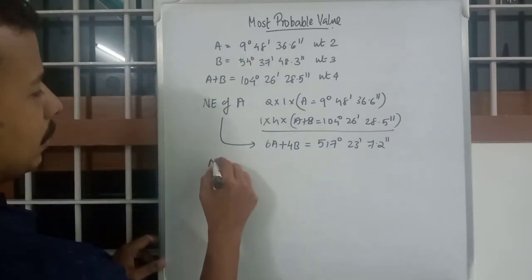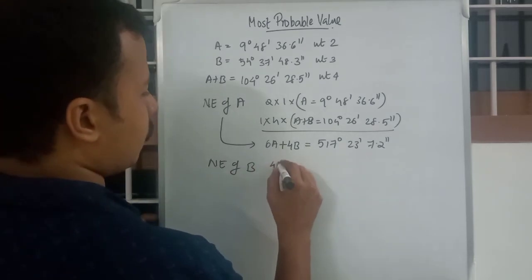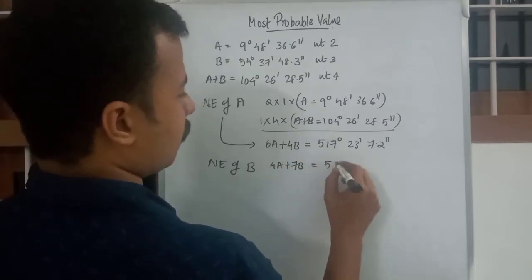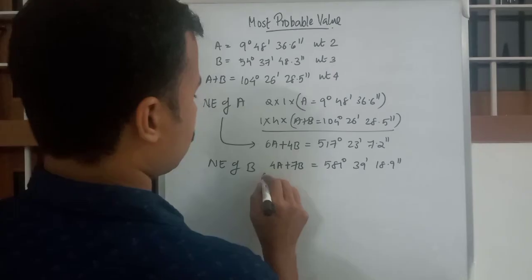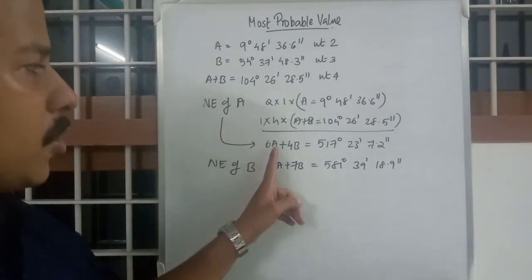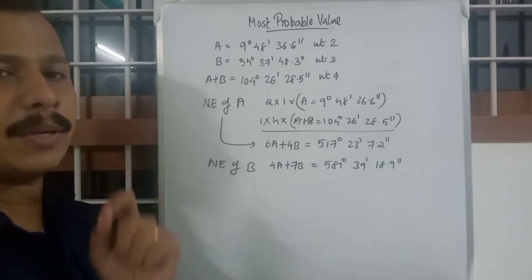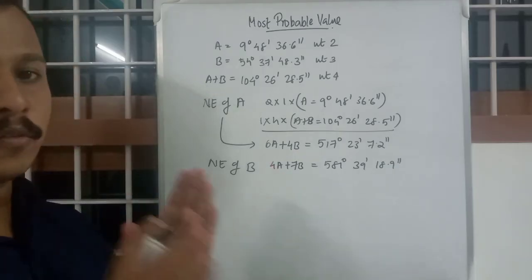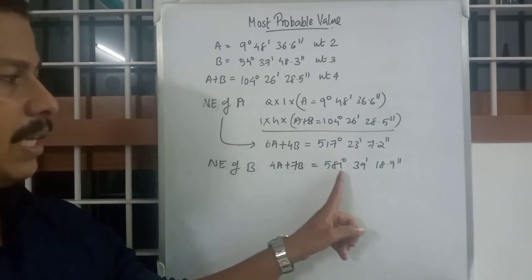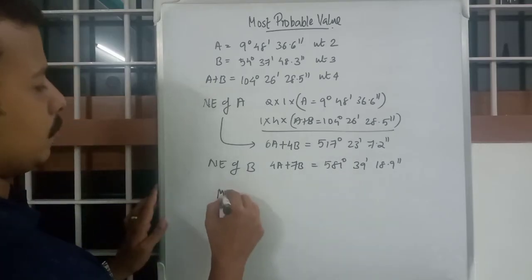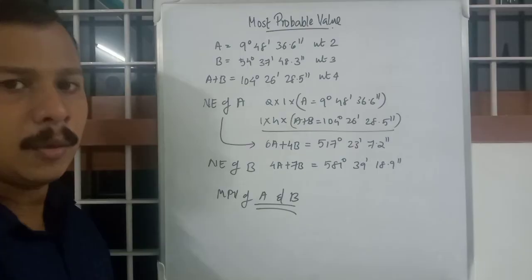So: 6A + 4B = 517°23'7.2" — this is the normal equation of A. Similarly, finding the normal equation of B gives: 4A + 7B = 581°39'18.9". Substitute the coefficients and angle values into your scientific calculator under two-unknown equation mode, and you will get the most probable values of A and B.